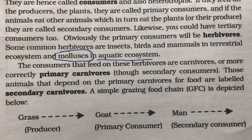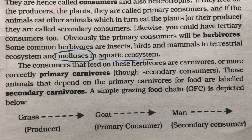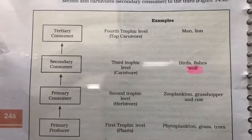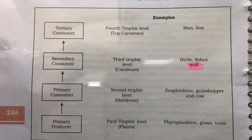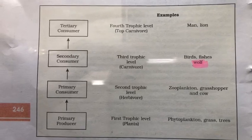A grazing food chain extends from producers through herbivores to carnivores, such as cattle grazing in grasslands, deer browsing in forests, or insects feeding on crops and trees. The detritus food chain begins with dead organic matter and passes through detritus-feeding organisms in soil. Larger amounts of energy flow through the detritus food chain compared to the grazing food chain. In a grassland food chain, the trophic levels are: plants, herbivores, carnivores, and top carnivores.